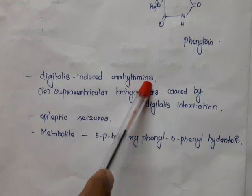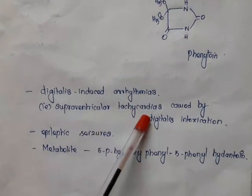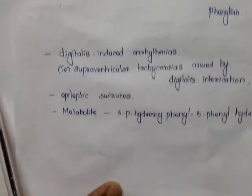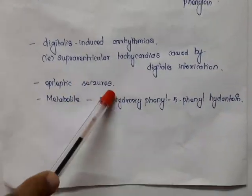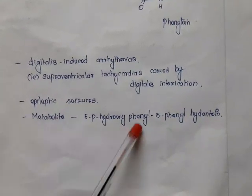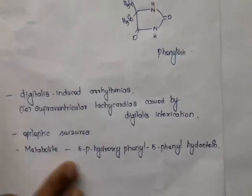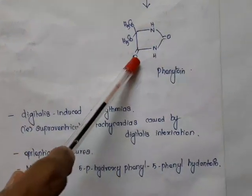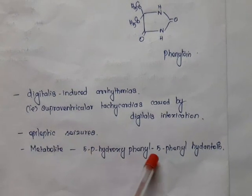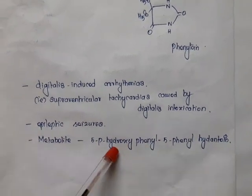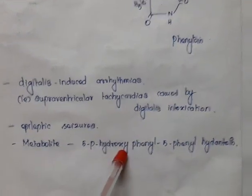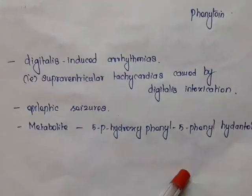Phenytoin is used in the treatment of digitalis-induced arrhythmia, especially supraventricular tachycardia caused by digitalis intoxication. It also has antiepileptic action and is used in the treatment of epileptic seizures. Its main metabolite is 5-(para-hydroxyphenyl)-5-phenylhydantoin, where one phenyl group acquires a hydroxy group at the para position.